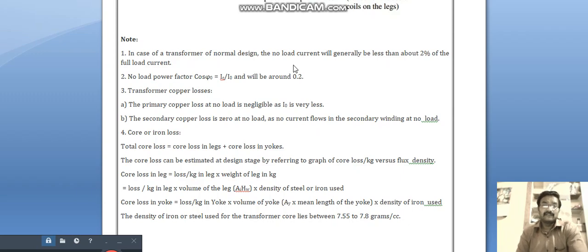Transformer copper losses: The primary copper loss at no-load is negligible as I naught is very less. The secondary copper loss is zero at no-load as no current flows in the secondary winding at no-load.